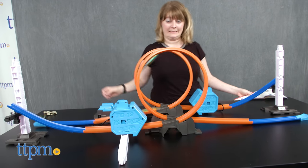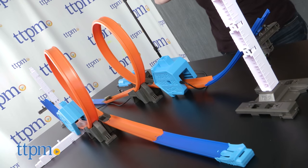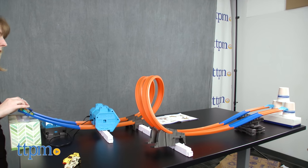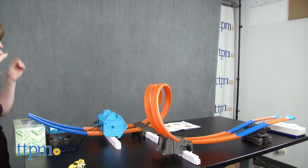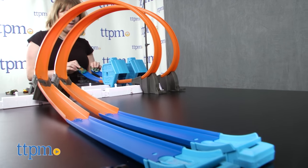Kids will like building and rebuilding the pieces into the four track configurations shown in the instructions, but what will really be fun for kids is taking the pieces, the box, other household items, and other Hot Wheels track they already own, and creating their very own Hot Wheels track and stunt set.